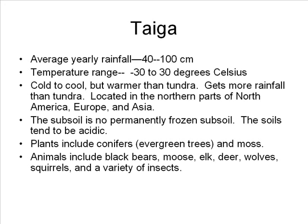Typical animals in the temperate deciduous forest include foxes, squirrels, raccoons, deer, turtles, and many species of birds and insects. The taiga has an average yearly rainfall of 40 to 100 centimeters and a temperature range from negative 30 to positive 30 degrees Celsius. The temperature in the taiga is cold to cool, but warmer than the tundra, and it receives more rainfall than the tundra.